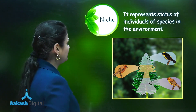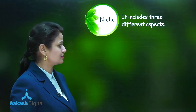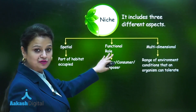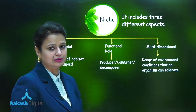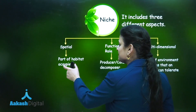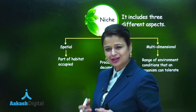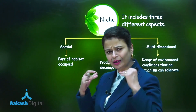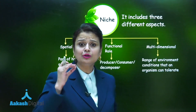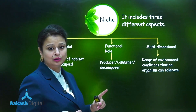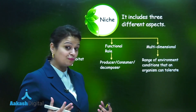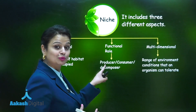Niche includes three aspects: spatial niche, functional niche, and multi-dimensional niche. Spatial niche represents the part of habitat occupied — it tells the physical space where the organism lives. Functional niche gives information about the organism's role: if it produces food, that individual is a producer.